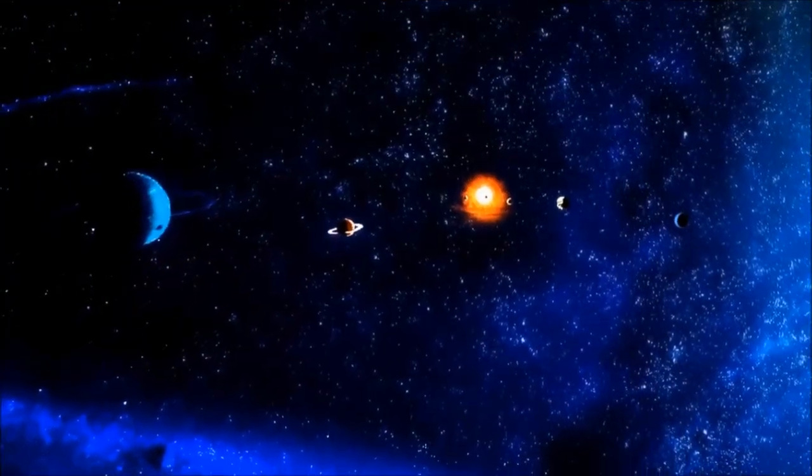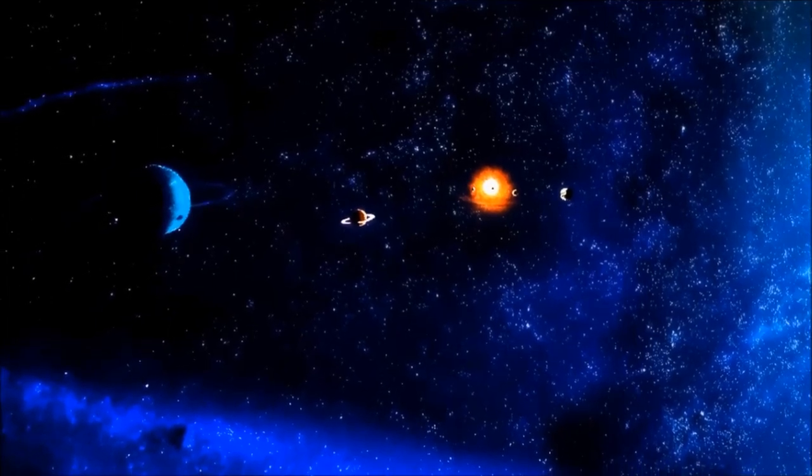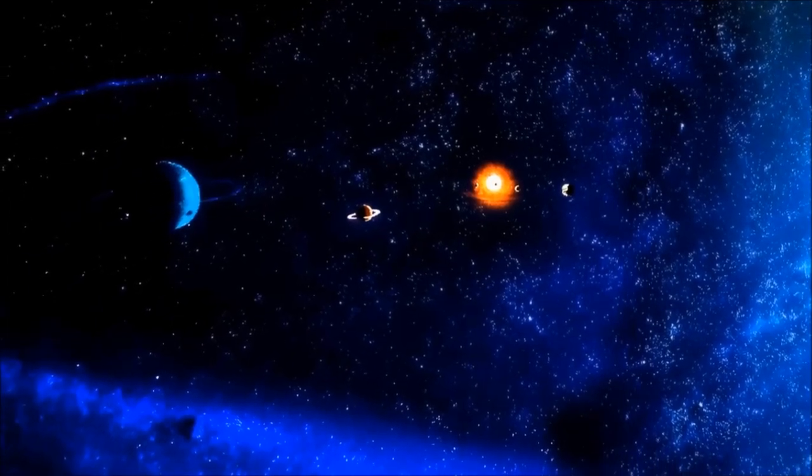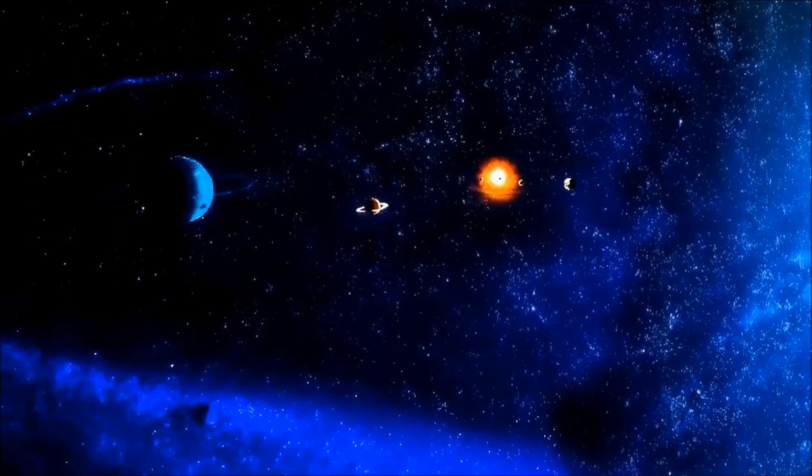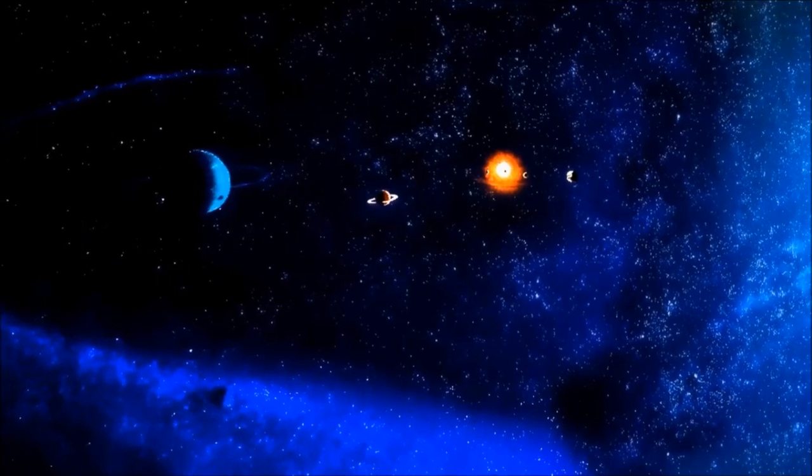When you think of our solar system, you probably imagine the nine, sorry eight, planets orbiting the Sun. But beyond Neptune, far from the heat of the Sun, there is a sparse ring formed by icy chunks ranging from the size of marbles to that of small planets.